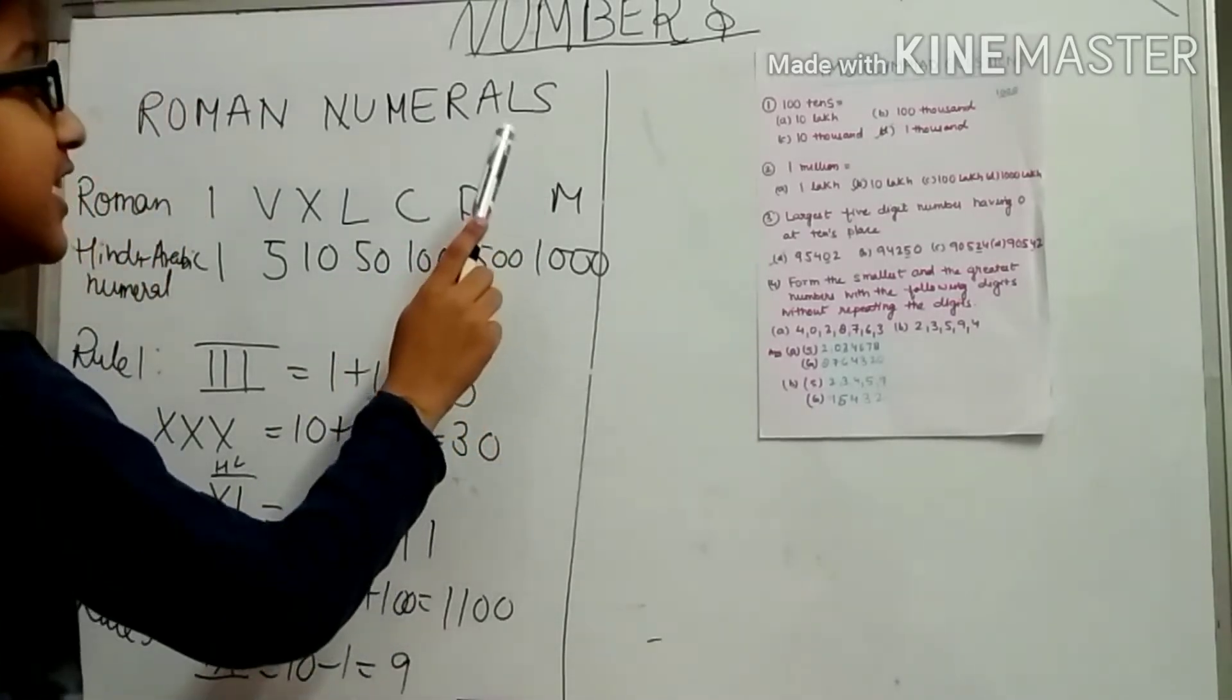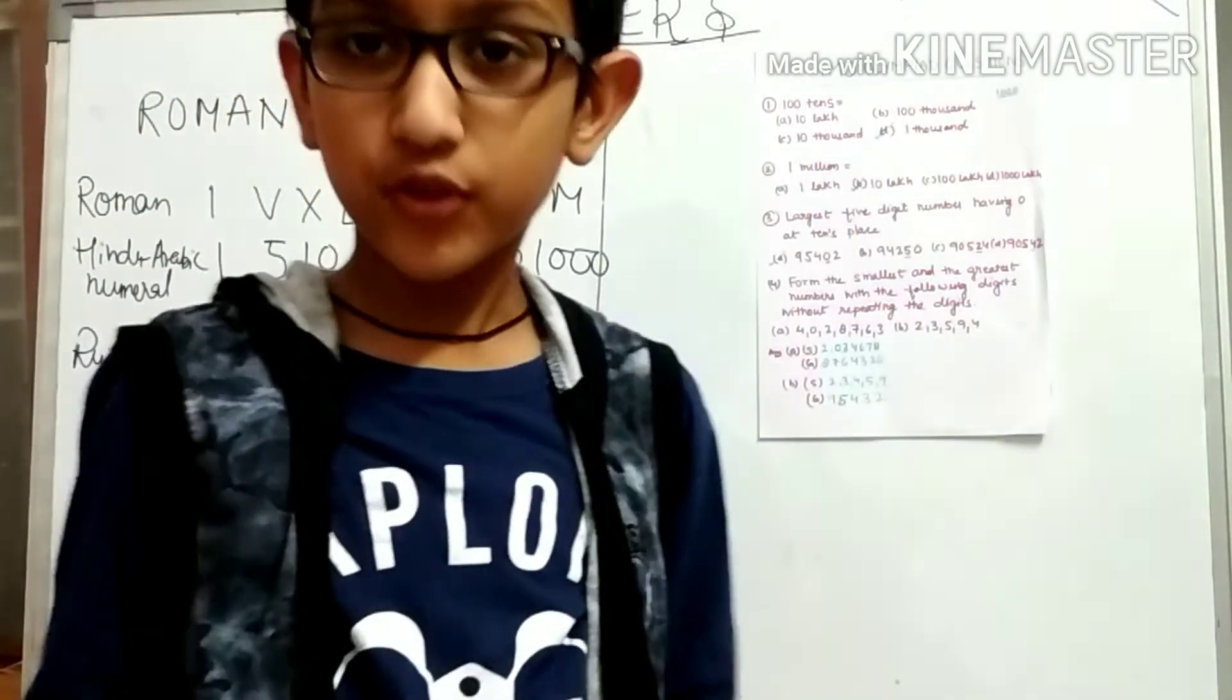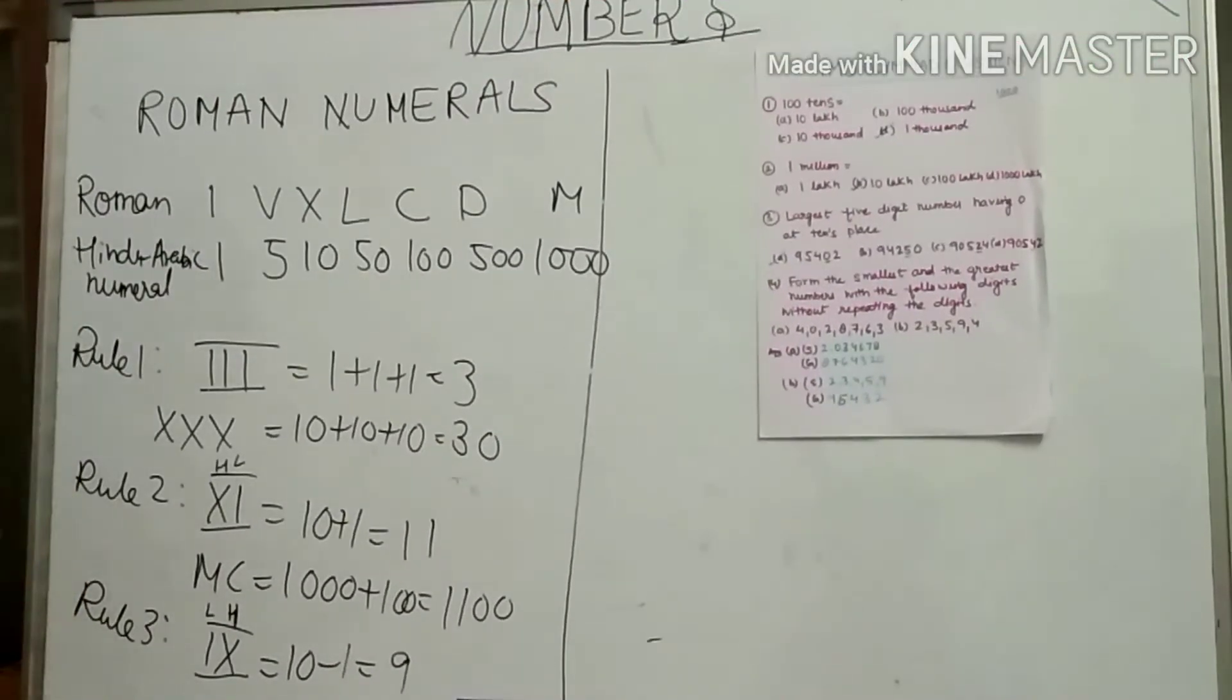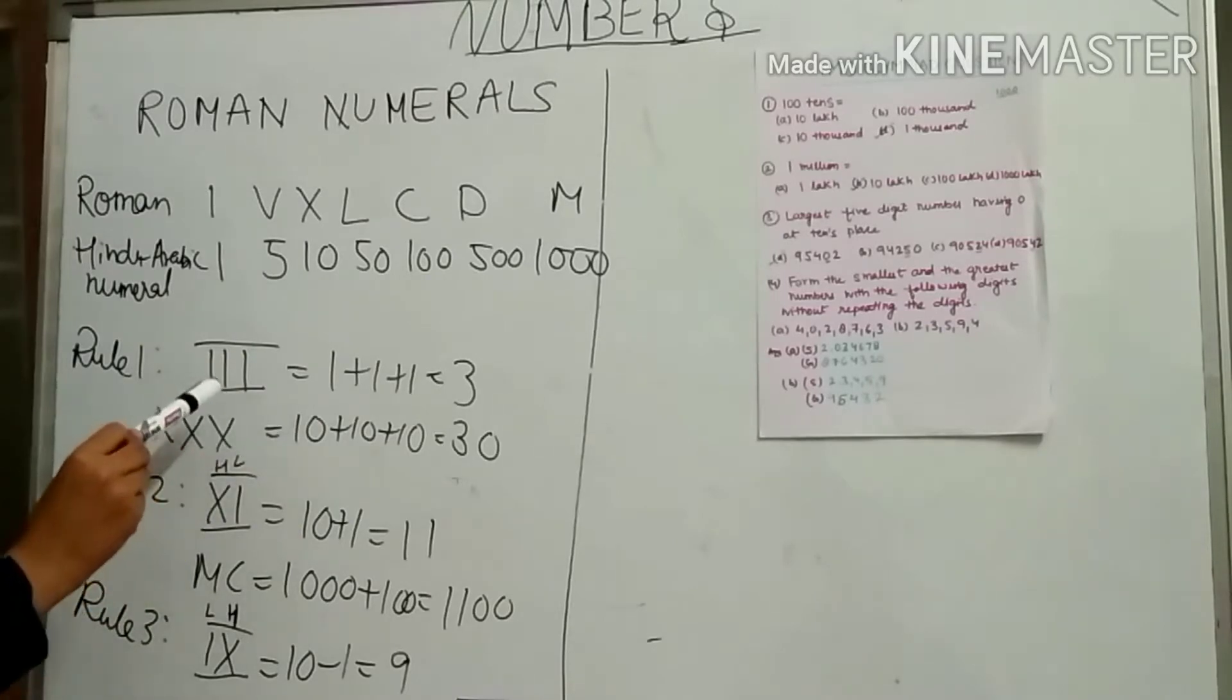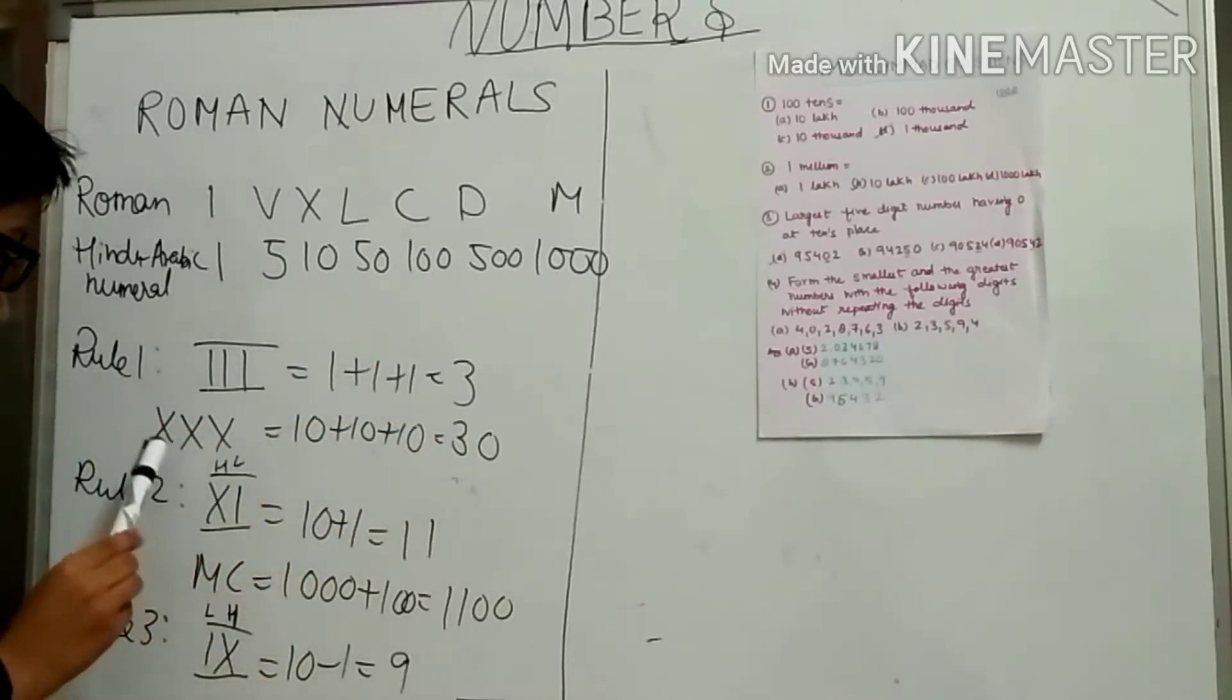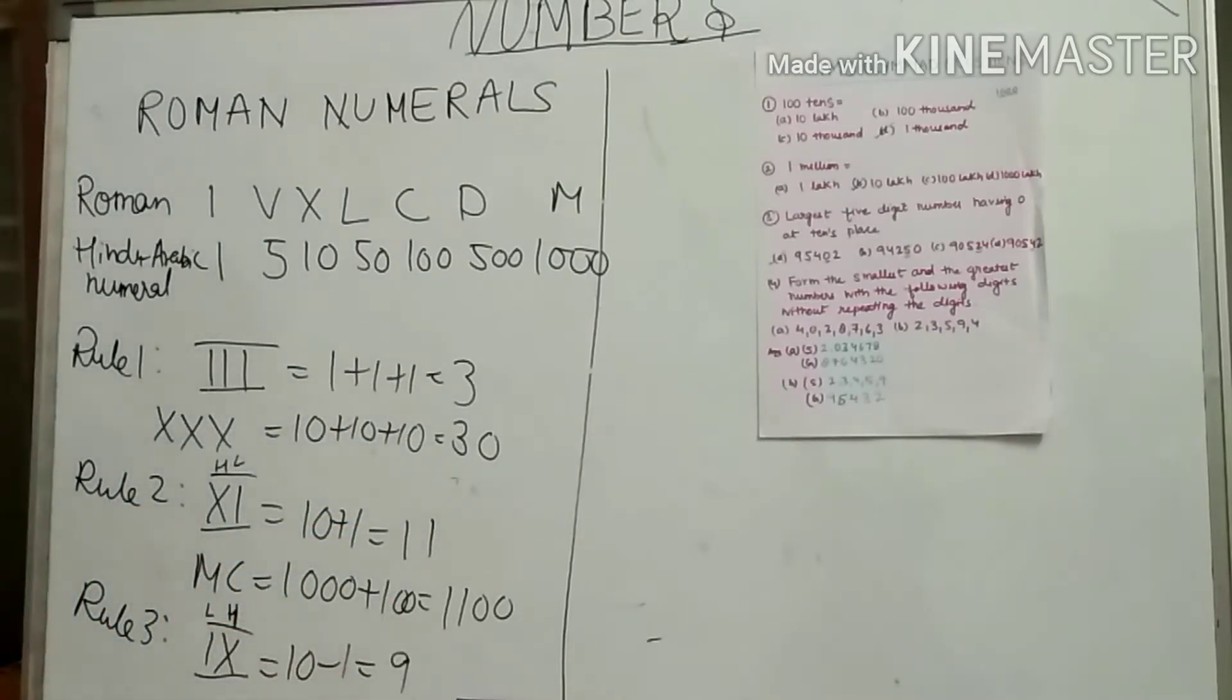There are some rules which we have to follow. Rule 1: when a number is repeated, we have to add. Example: III equals 1+1+1 equals 3. XXX equals 10+10+10 equals 30. Rule 2: if this digit is higher and this digit is lower.